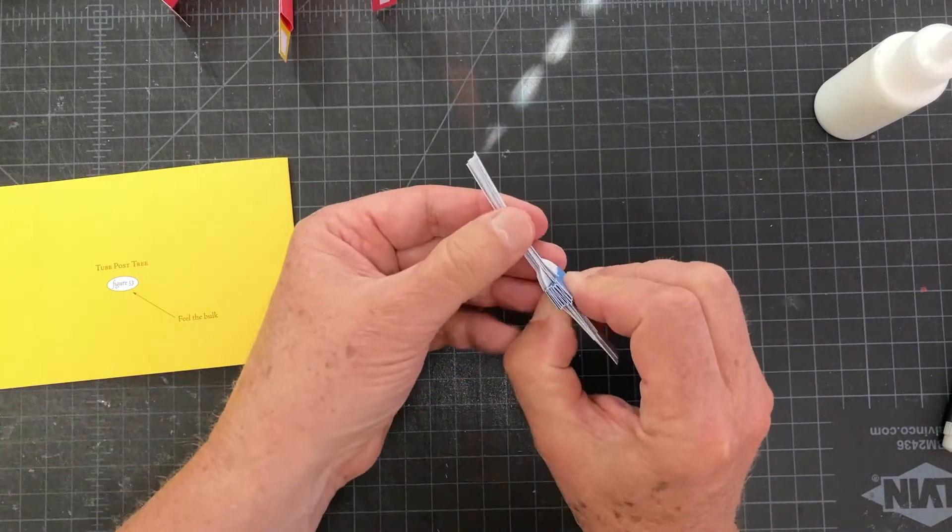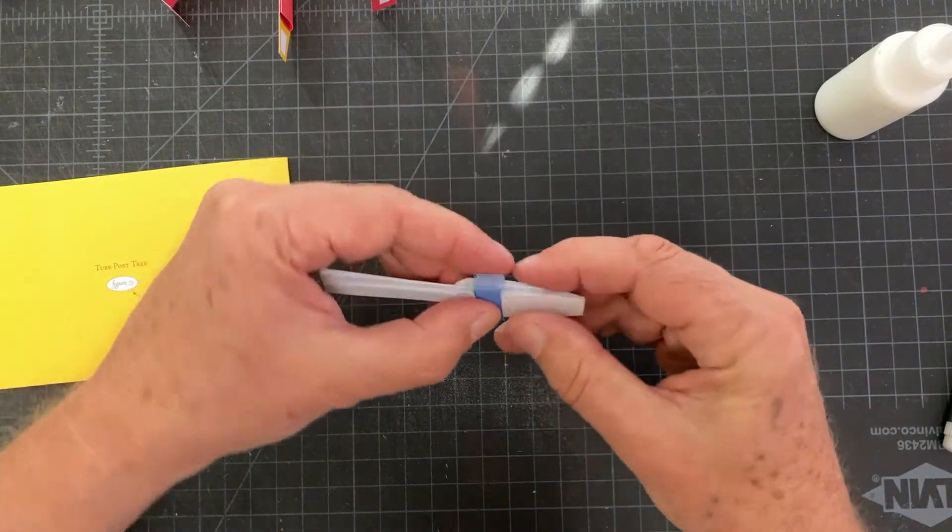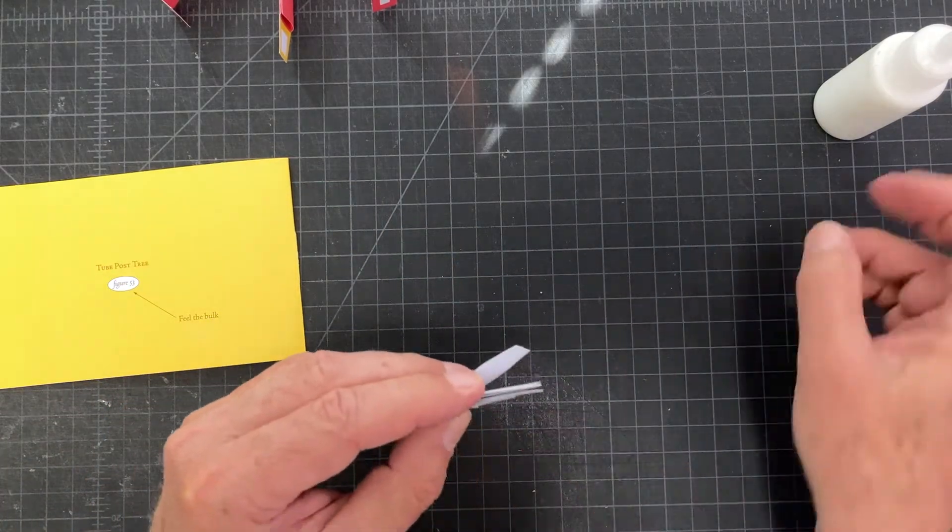All right, this is the closed position that the pop-up will be closed in. All right, what I'm going to do now is take all of the glue tabs and put a little bit of glue on them.